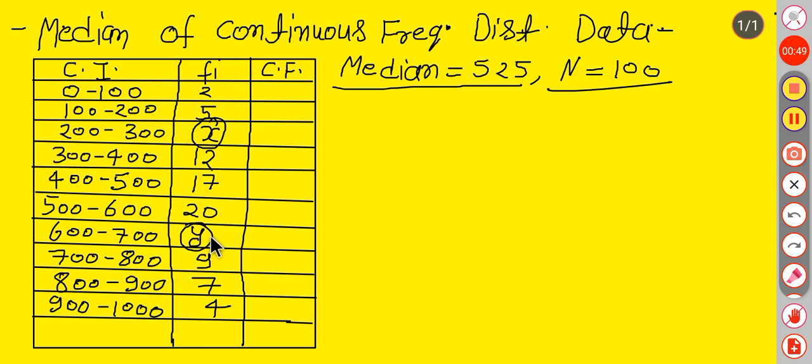So first of all, let us find the cumulative frequency. So here 2, now 5, so it would be 7.